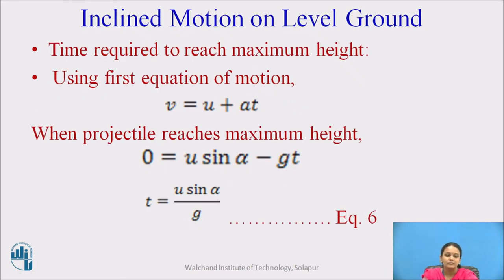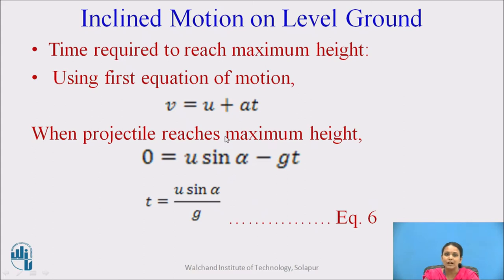To find the time required for the particle to reach maximum height, we use the first equation of motion: V equals U plus AT. When the projectile reaches maximum height, the final velocity is zero, initial velocity is U sine alpha, and acceleration is minus g. So T is equal to U sine alpha divided by g.